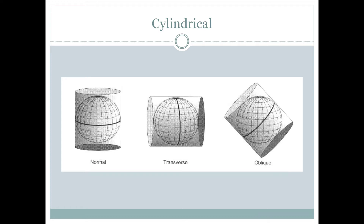We could also orient the cylinder so it's horizontal. In this case, it would touch along one line of longitude and then the other line of longitude on the other side of the globe. This is called a transverse cylindrical map projection. However, we could also place the cylinder at any angle in between, so that the line where the globe touches the cylinder runs along any line we want. We would call this an oblique map projection.